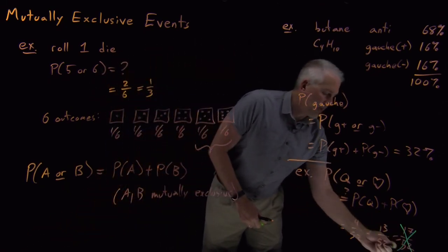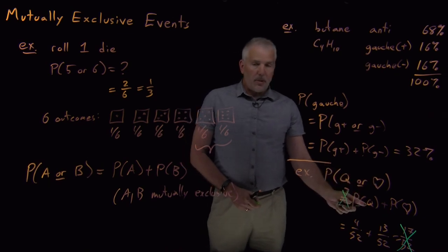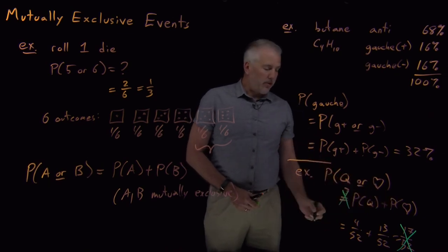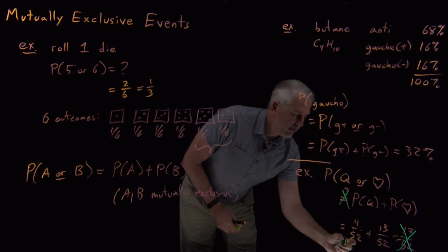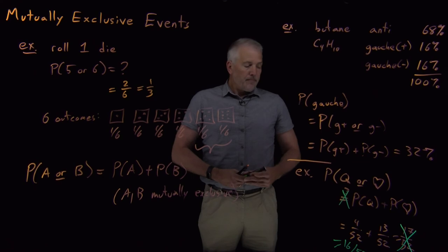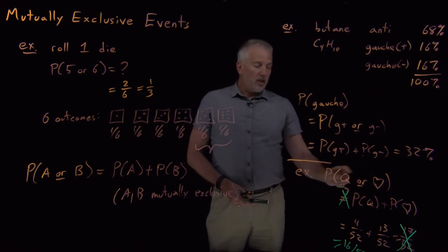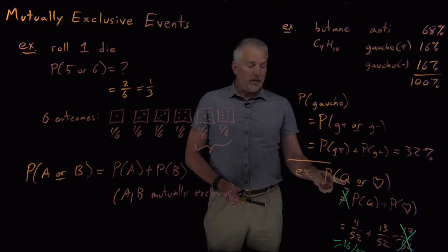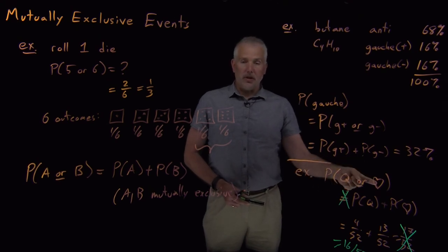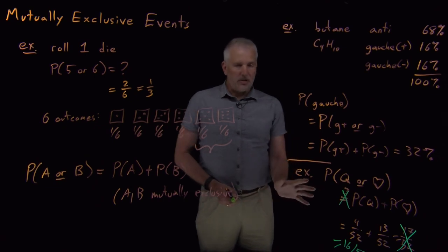This is not the right answer. The probability of a queen or a heart is not the probability of a queen plus the probability of a heart. The right answer is only 16 out of 52. There are 16 cards that are either a queen or a heart. And the reason we didn't get the right answer with this equation is queens and hearts are not mutually exclusive. If I draw a queen, I could also have drawn a heart. Those two possibilities don't exclude one another.